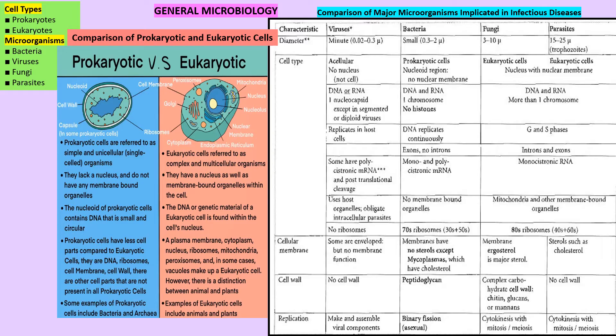Here we can see a comparative table between viruses, bacteria, fungi, and parasites. Bacteria are prokaryotic, with a cell wall of peptidoglycan, having both RNA and DNA. Viruses have a protein capsid, nucleocapsid, nucleic acid in the protein capsid, and some have envelopes surrounding them. Viruses always have either RNA or DNA, never both. Fungi, parasites, plant cells, and animal cells are all eukaryotic.